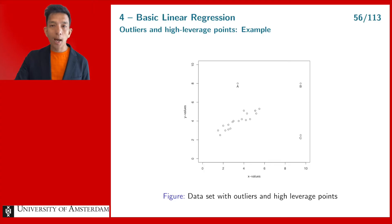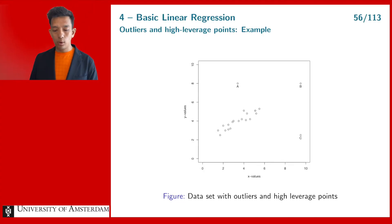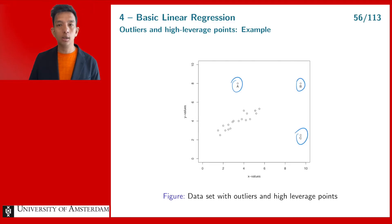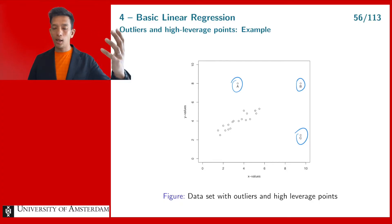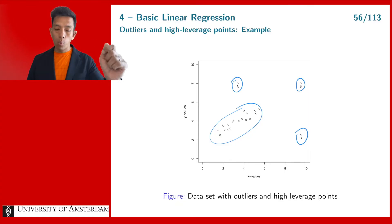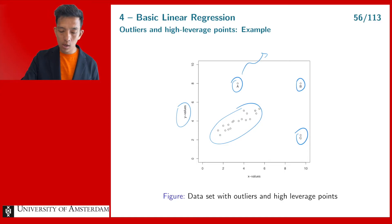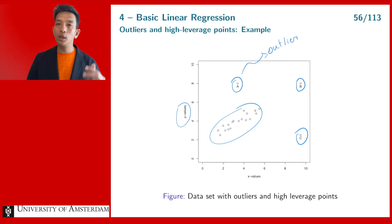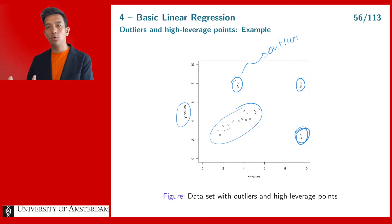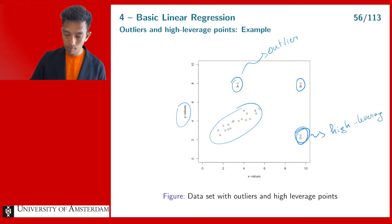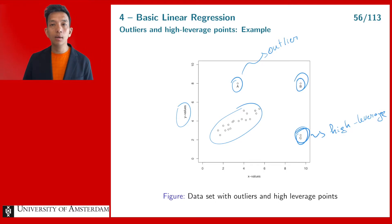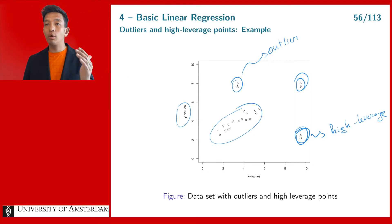Let me illustrate this with a simple example. I take a data set with three extreme observations: A, B, and C. Observation A is very large in the y direction compared to the rest — so A is an outlier, an extreme observation in the y direction. Observation C is very large in the x direction — so C is a high leverage point. Finally, observation B is both an outlier and a high leverage point, because B is very large in both the y and x directions.